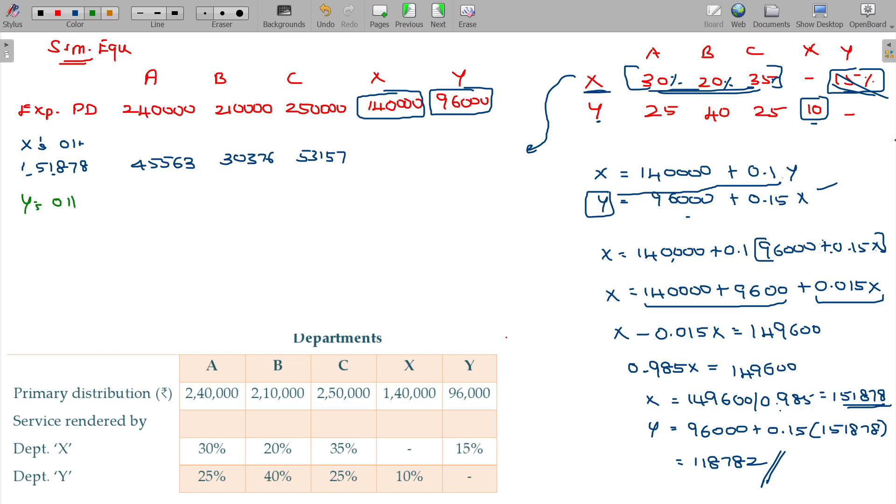Now, Y's overhead should be distributed. Y's overhead here being 118,782 should be distributed using this percentage. 25 percentage on 118,782, the value being 29,696 for A. B gets 40 percentage, 47,513. C gets 29,695.